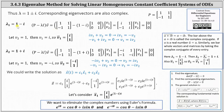Beginning with lambda sub one equals one minus i, notice the difference of P and lambda times I results in the two-by-two matrix with entries i, one, negative one, i, times vector V equals a zero vector. To determine a corresponding eigenvector, let's write out the corresponding equations. The first equation is i·V₁ plus V₂ equals zero. The second equation is negative V₁ plus i·V₂ equals zero. These two equations are multiples of one another — if we multiply the first equation by i, we get the second equation. This indicates we have an infinite number of solutions, and we can determine a corresponding eigenvector using either equation.